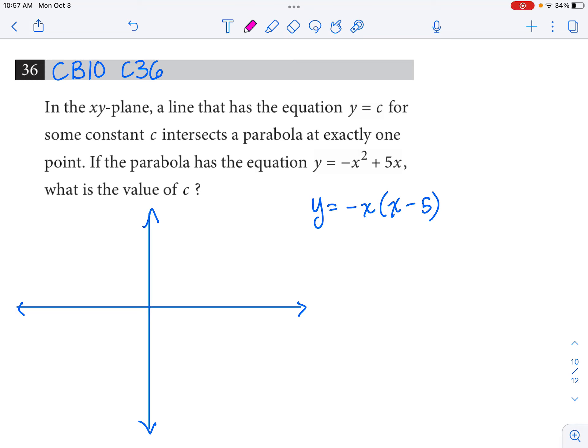College Board 10, calculator allowed number 36. In the xy-plane, a line that has the equation y equals c, a horizontal line, for some constant c intersects a parabola at exactly one point. If the parabola has the equation y equals negative x squared plus 5x, what is the value of c?